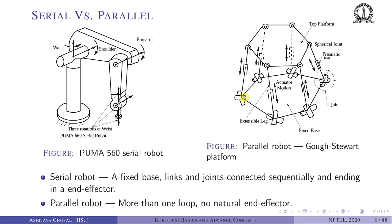A serial robot has a fixed base with links and joints connected sequentially, ending in an end effector where tools like a welding gun, paint gun, or screwdriver can be attached. A parallel robot, on the other hand, is not sequential — it has closed loops. Starting from the base, going up to the top platform and back forms one loop; there are several such loops.